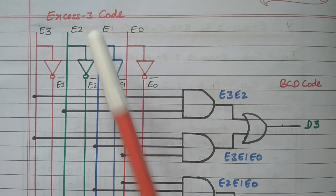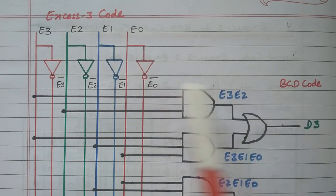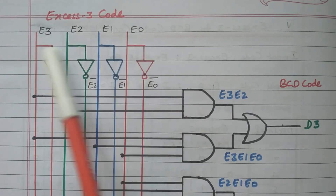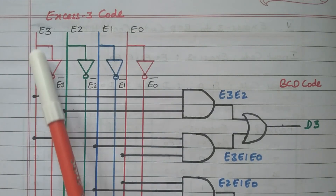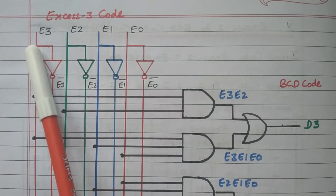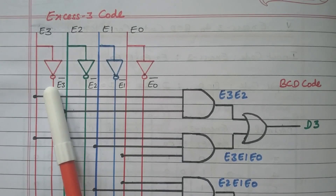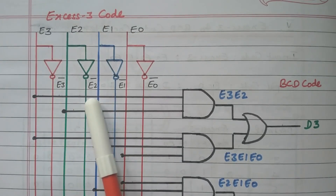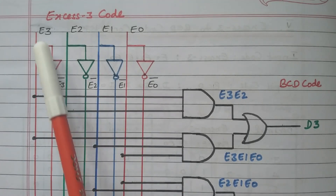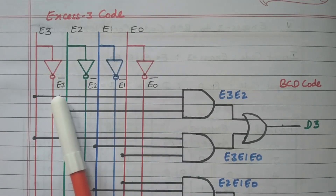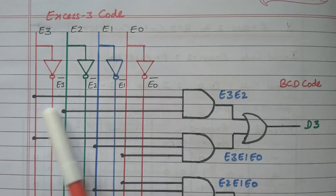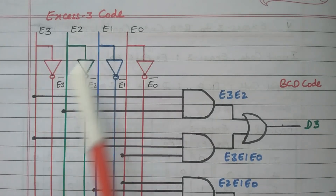This is the input XS3 code and the output is the BCD code, converting from XS3 to BCD. All four inputs E3, E2, E1, E0 are available. To get the complements E3', E2', E1', E0', NOT gates are connected to each input line, giving 8 possible signal lines in total.